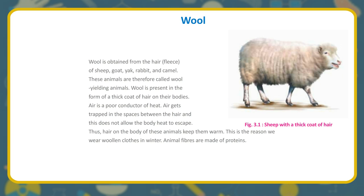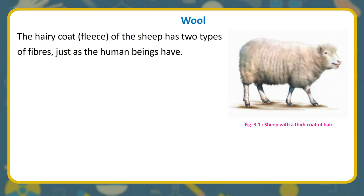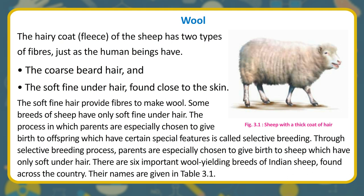The hairy coat of the sheep has two types of fibers — just as human beings have coarse beard hair and soft fine under-hair found close to the skin. The soft fine hair provides fibers to make wool. Some breeds of sheep have only soft fine under-hair. The process in which parents are especially chosen to give birth to offspring with certain special features is called selective breeding. Through selective breeding, parents are chosen to produce sheep which have only soft under-hair. There are six important wool-yielding breeds of Indian sheep found across the country, given in Table 3.1.